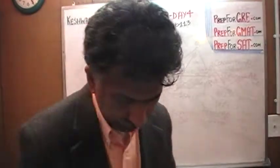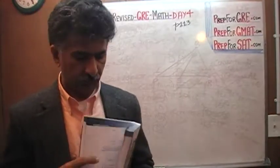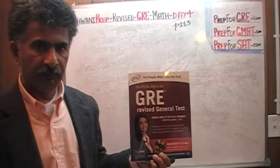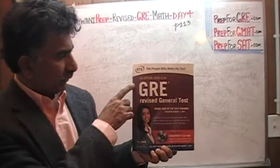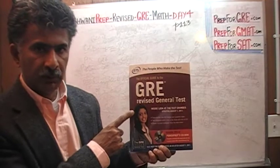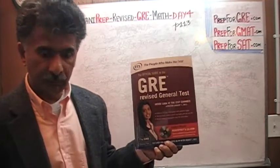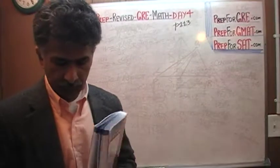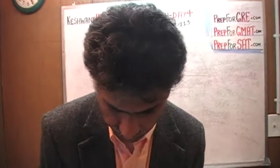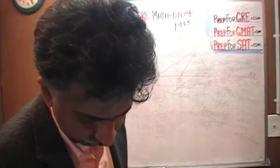We are here because we want to prepare for the math portion of the revised GRE. We have been solving math problems out of this book, The Official Guide to the GRE: The Revised General Test. It is important that you have this book in front of you. If you do not own it already, purchase it immediately. You are going to need it to follow my work. Turn to page number 113 and you will see the problem I am about to solve.